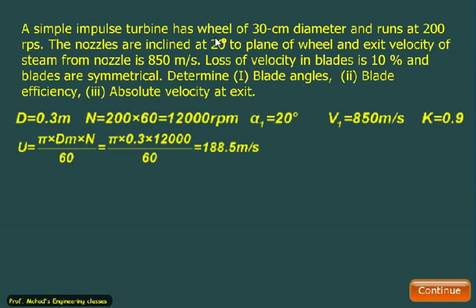A simple impulse turbine has a wheel of 30 cm diameter, runs at 200 rps, and the nozzles are inclined at 20 degrees to the plane of wheel. The exit velocity of the steam from nozzle is 850 m/s. The loss of velocity in the blade is 10% and the blades are symmetrical.